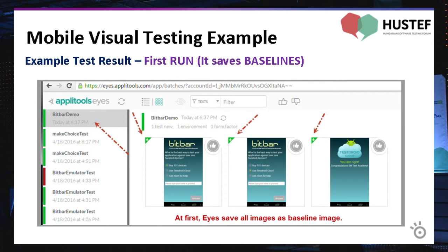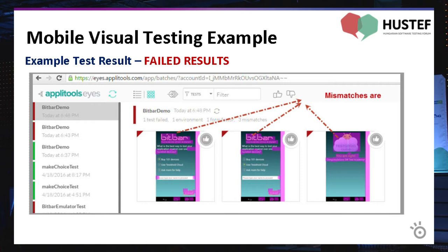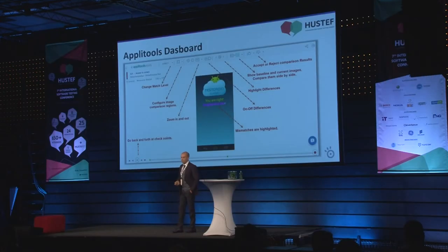This is the first run — Applitools Eyes saves the baseline images. This is the passing scenario: Applitools Eyes compares the images, there are no differences, everything is green. This is the failing scenario: Applitools Eyes automatically highlights the mismatches and our test is red because it failed. The Applitools Eyes dashboard lets you do a lot — it's very informative and handy. You can change the match level, show the baseline and actual image side by side, highlight differences, and much more.